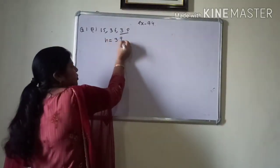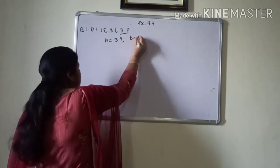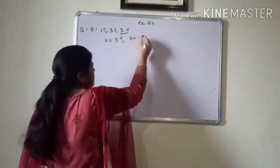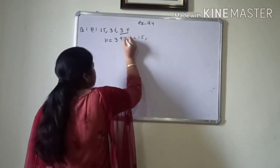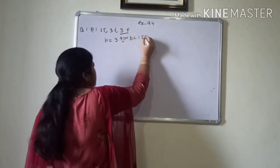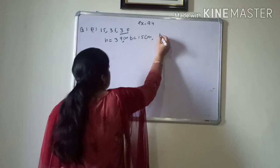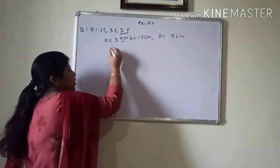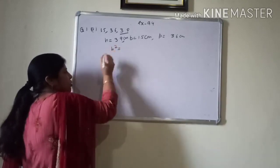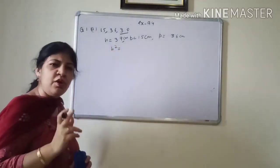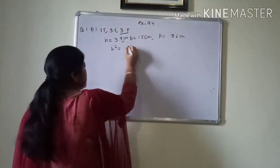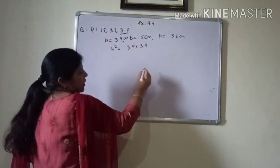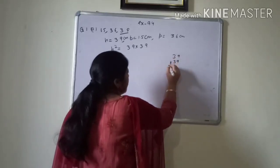So, h is 3.9. You can take base either 1.5 or 3.6. And never forget to write the unit. And perpendicular is 3.6. So, first according to Pythagoras theorem, we will take the square of hypotenuse. Hypotenuse is 3.9 into 3.9. Multiply 39 by 39.